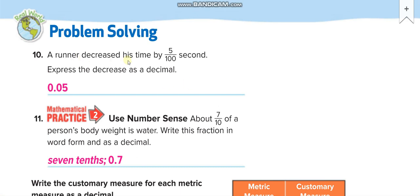A runner decreased his time by 5 over 100 second. Express the decrease as a decimal. You guys know 5 will come at the 100th place. Let me write it again for you guys, that place values, here it is.